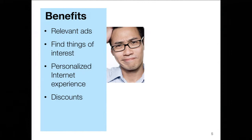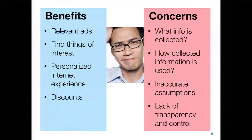Johnny finds some benefits to this system — he gets ads more relevant to things he's interested in, it helps him find things of interest, personalizes his internet experience, and he was actually pretty pleased to get a discount on that dandruff shampoo. But he also has concerns: what other information did they collect, what else do they know, how exactly did they get it, are they making inaccurate assumptions? Sometimes he shops for products for other people, and he wonders if that's going into his profile. He also feels he doesn't have real awareness or control over the situation.